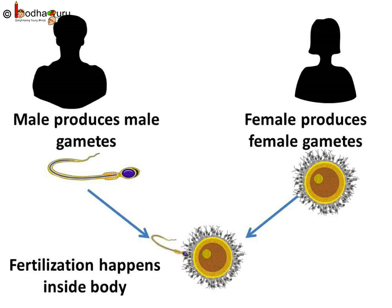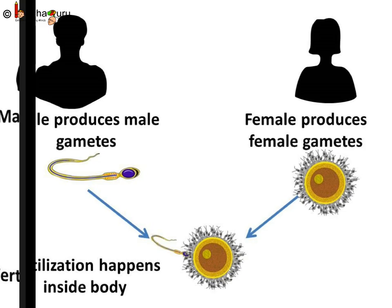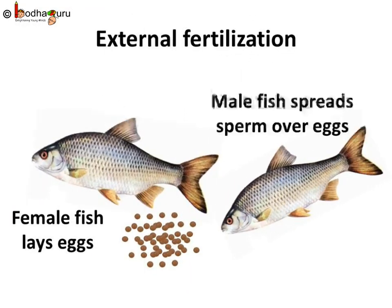For internal fertilization, the male gamete enters the female reproductive system, as the internal fertilization occurs inside the female reproductive system. Fertilization may occur outside the animal's body too. Such fertilization is called external fertilization.